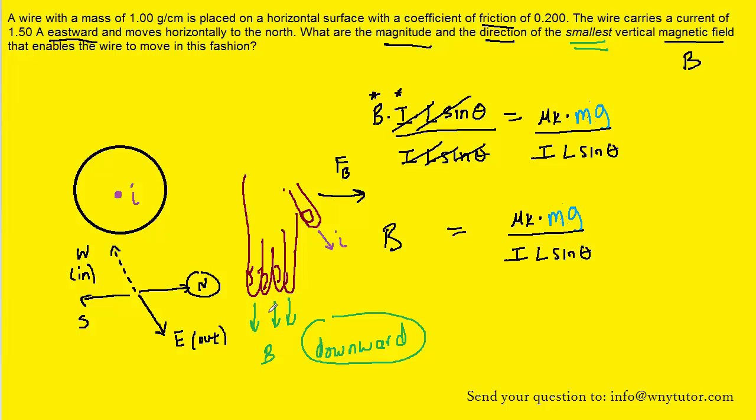The angle between the magnetic field and the current will be 90 degrees, so we'll fill in 90 for theta.